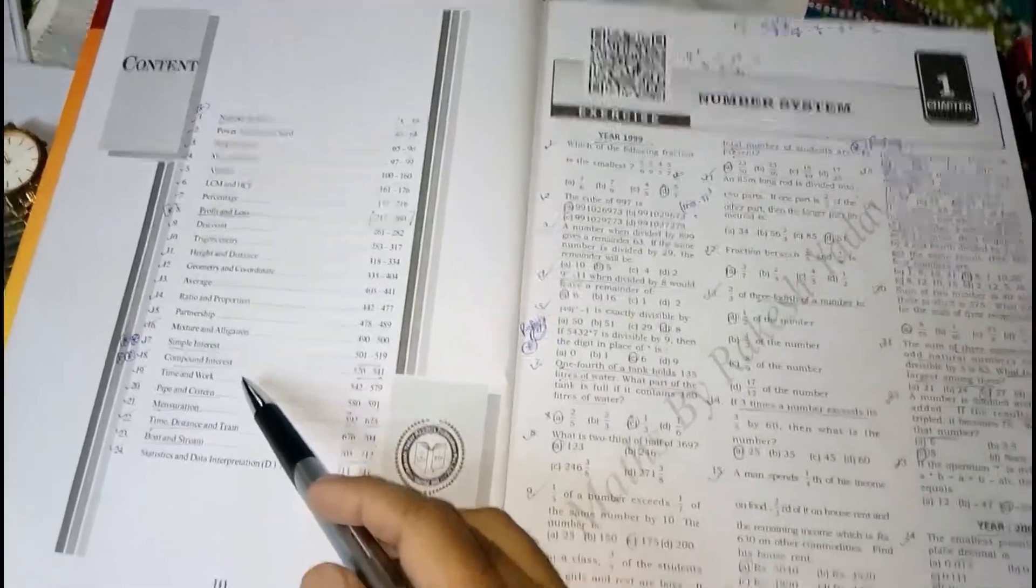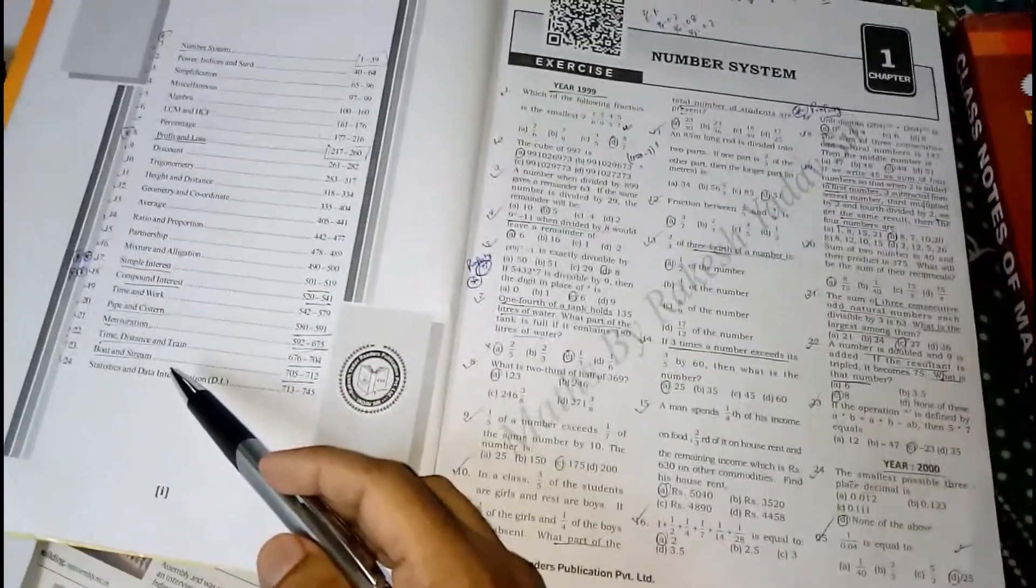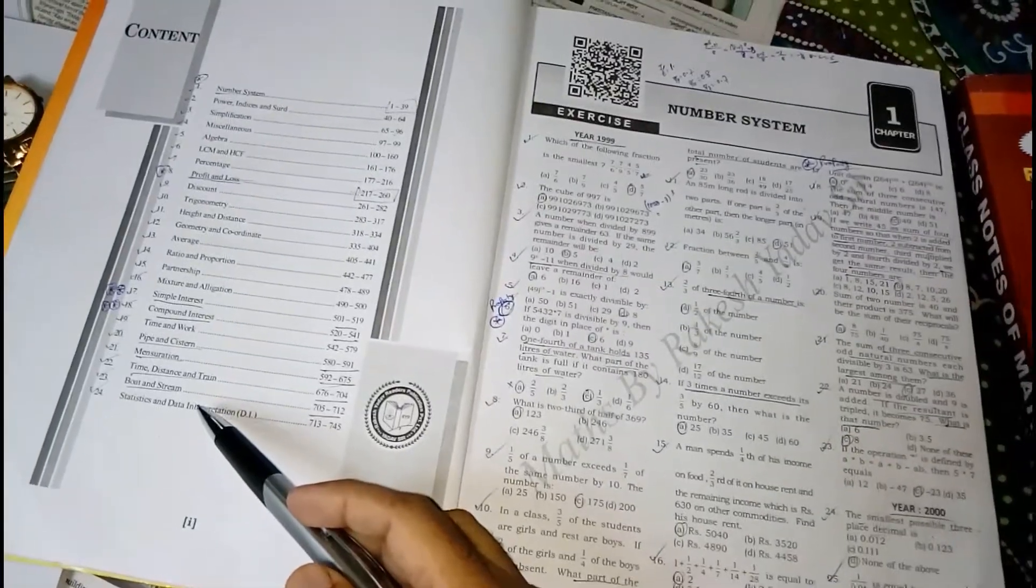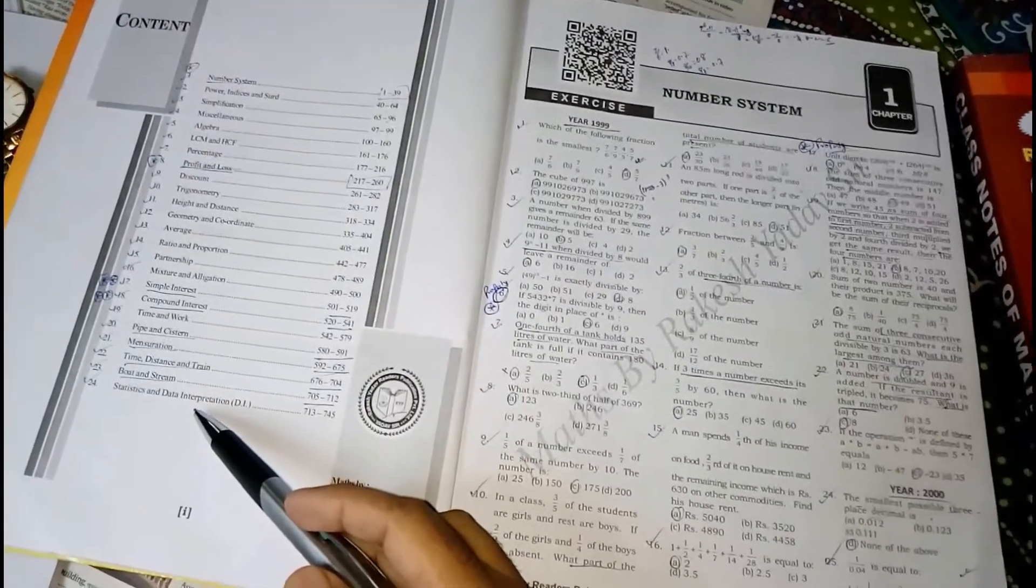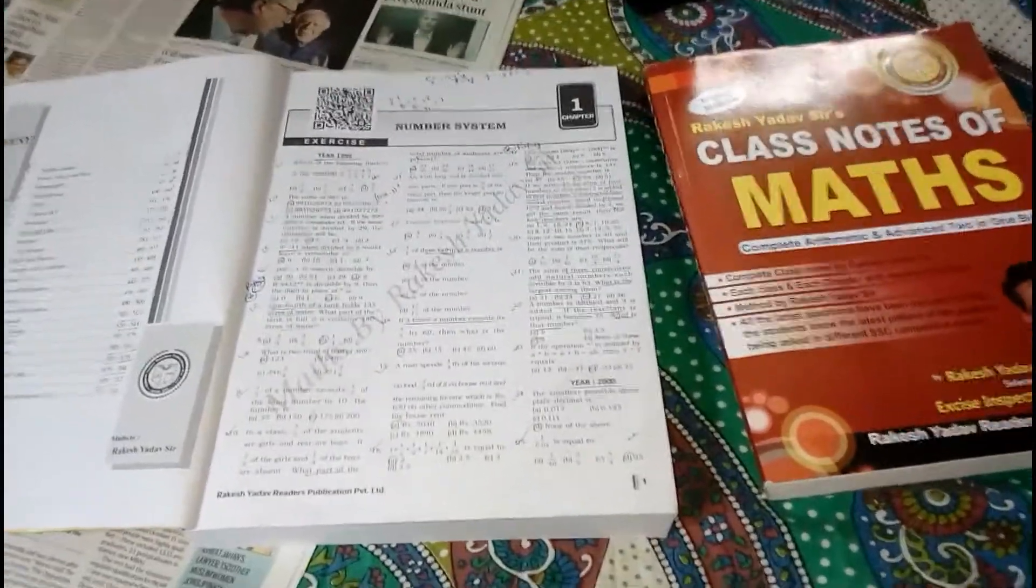Height and distance, geometry and coordinate, average, ratio and proportion, partnership, mixture and allegation, simple interest, compound interest, time and work, pipe and cistern, mensuration, time distance and train, boat and stream, statistics and data interpretation.